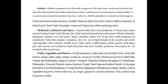The next is rubber. Rubber is prepared from the latex milk of the rubber tree. Acetic acid is mixed with the milk collected from rubber plantations; then it is heated at low temperature to obtain rubber. It is used in many industrial products like tyres, tubes, etc. Rubber plantation is carried out in regions of hot and humid climate with heavy rainfall. Malaysia ranks first in the world in rubber production. In India, Kerala, Tamil Nadu, Karnataka, Assam, and Tripura are rubber producing states.